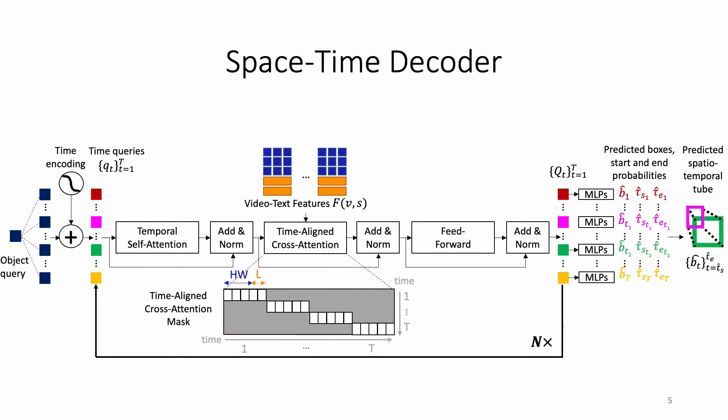Our space-time decoder jointly reasons about space, time, and language. It takes as input time encodings, one per frame, denoted as time queries, and uses the output from the video-text encoder.